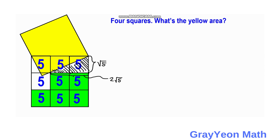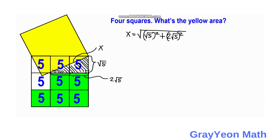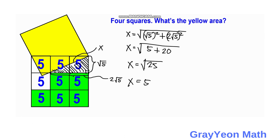To find the hypotenuse of this right triangle, we label it x. By the Pythagorean theorem: x = √( (√5)² + (2√5)² ) = √( 5 + 20 ) = √25, so x = 5 units.